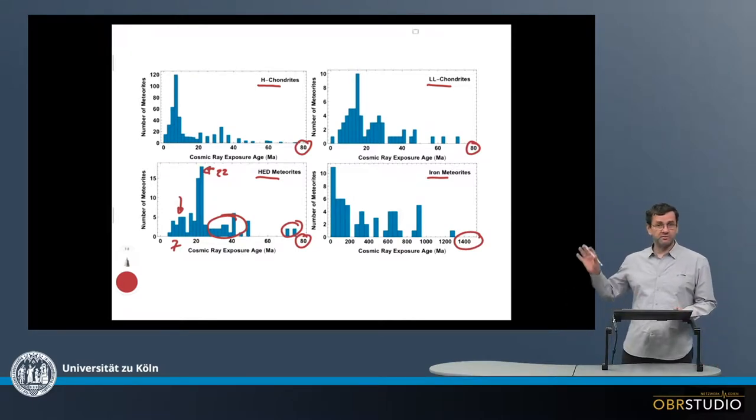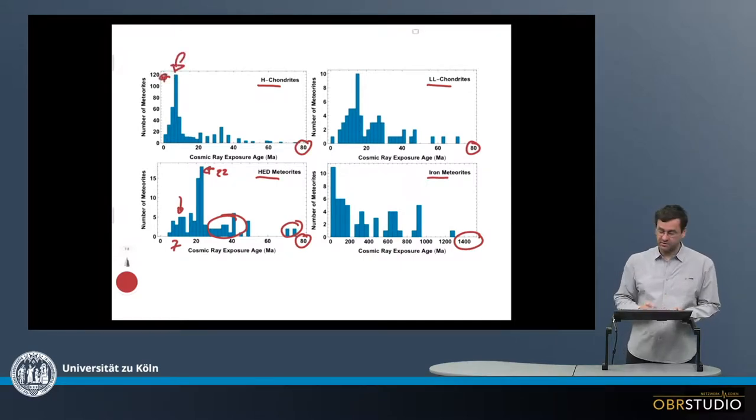Now, if true, then what we observe among the ordinary chondrites are peaks as well. So, for example, here, this is one peak, and you can see this is quite a lot of meteorites, about 120.